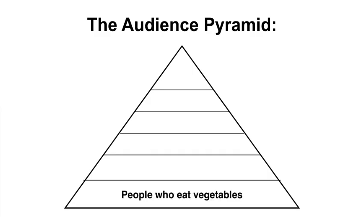An audience pyramid is a way of organizing potential audiences from the largest and most broad at the bottom to the smallest and most specific at the top. As we go up each level, we get closer to our hottest customer possible. For my hydroponic system, the base of the pyramid — the most broad group — would be people who eat vegetables, which is basically everybody on the planet. That's clearly too broad, so we need to go up a level.